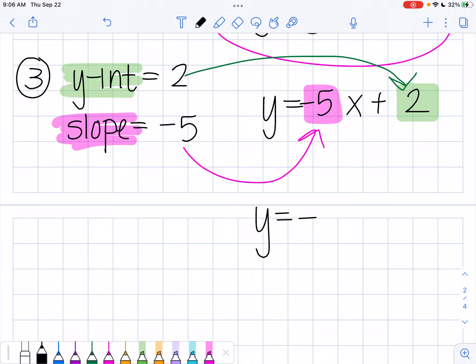I'm going to just rewrite that. Negative 5x plus 2. And that will be my final answer. Let me know if you have any questions. Good luck.